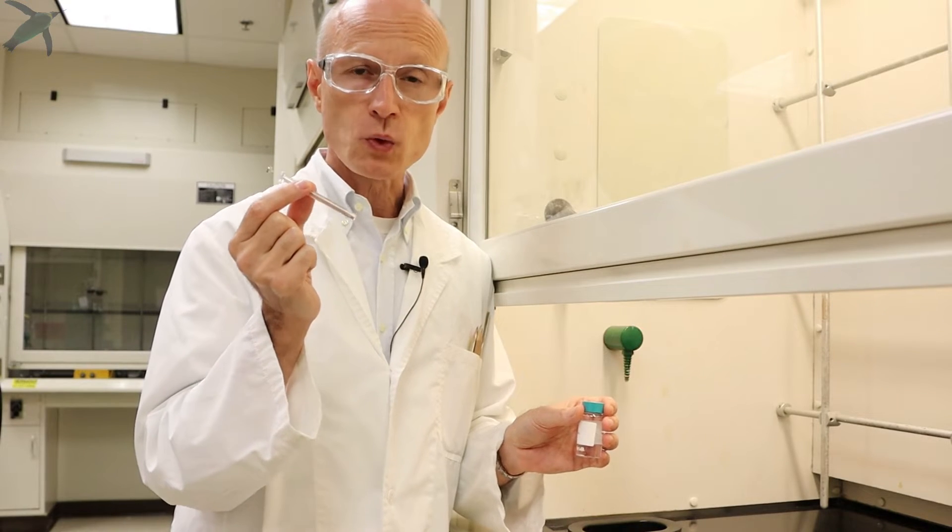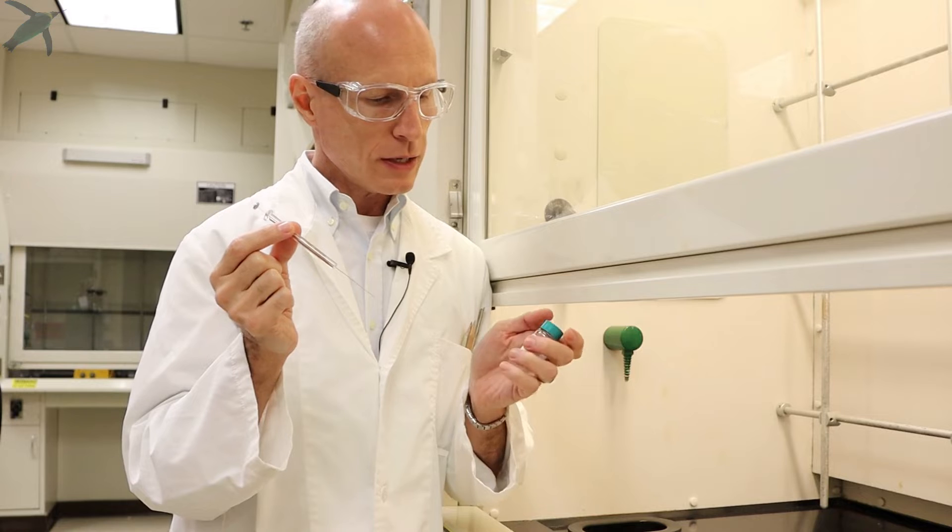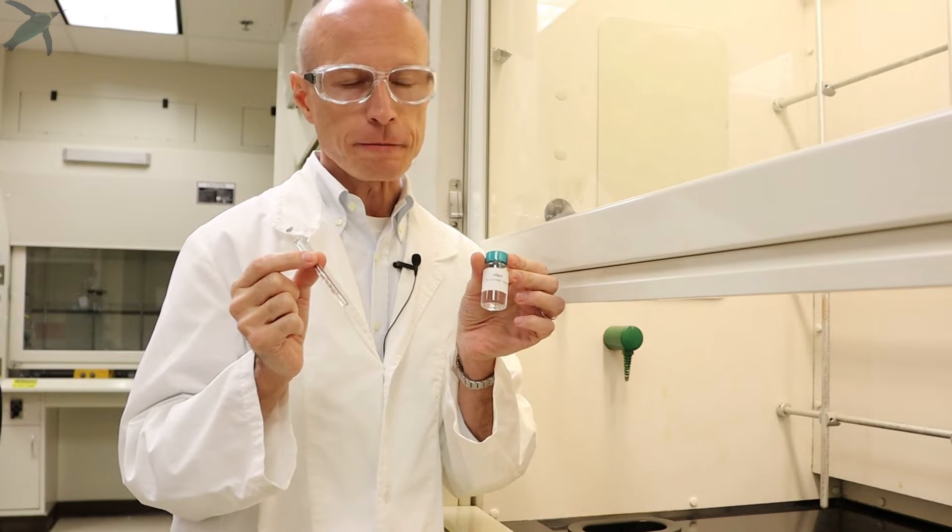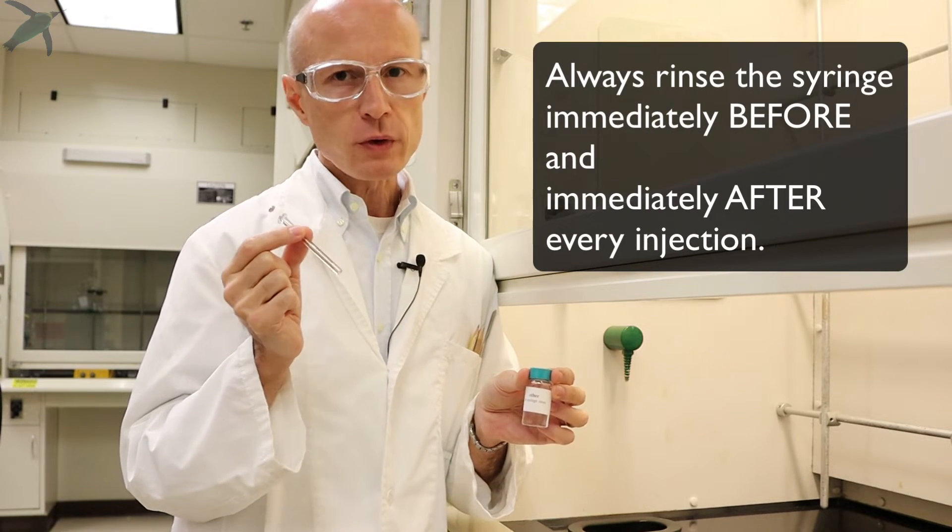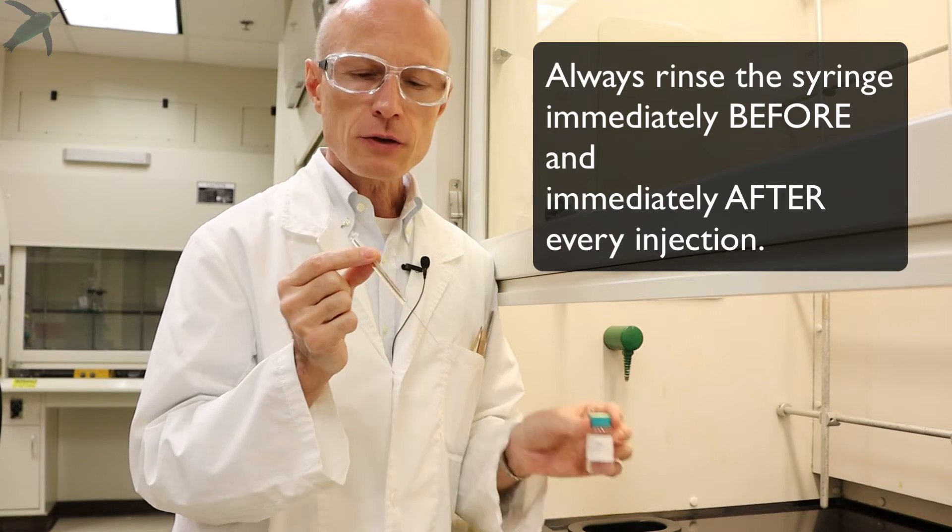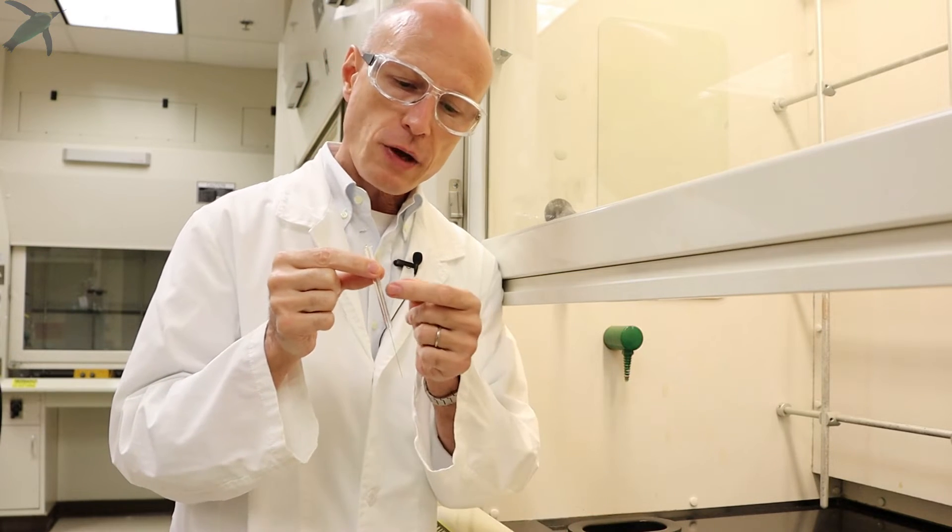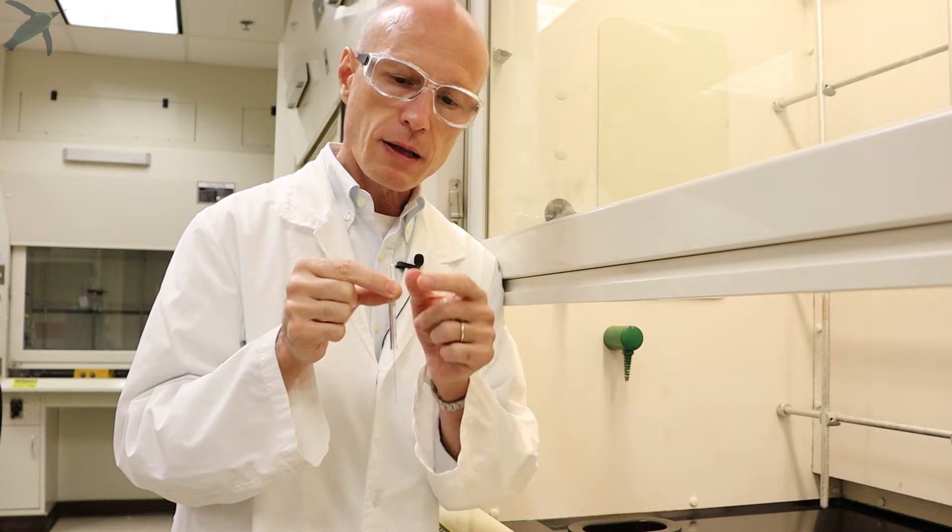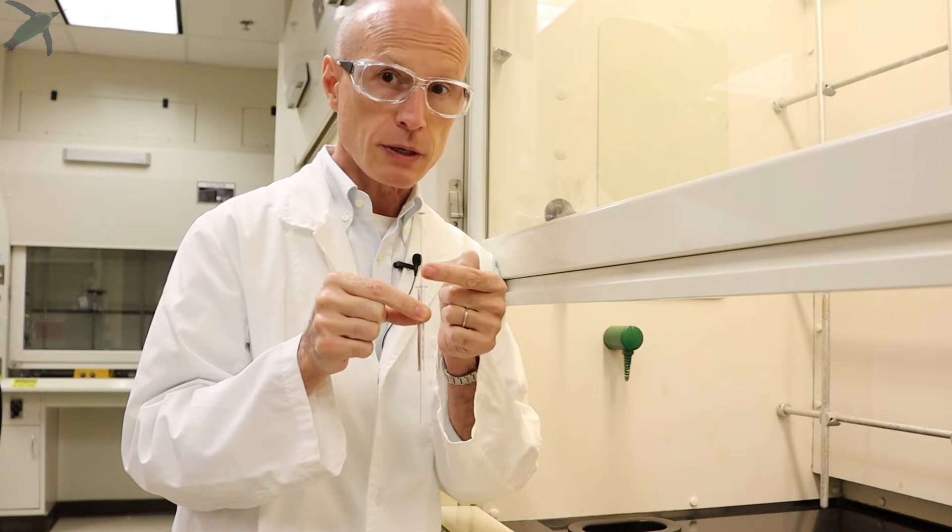The first thing you want to do is rinse the syringe, normally with an organic solvent like ether. You want to do this for two reasons: obviously because you want your syringe to be clean, and second because you have a glass barrel and stainless steel plunger.